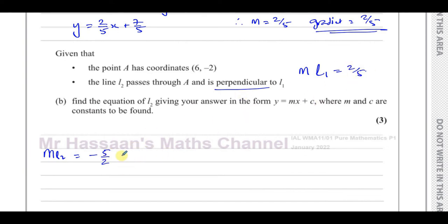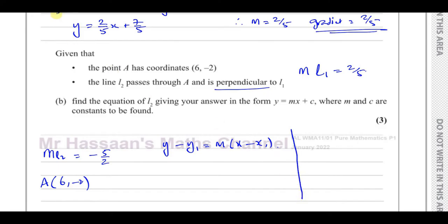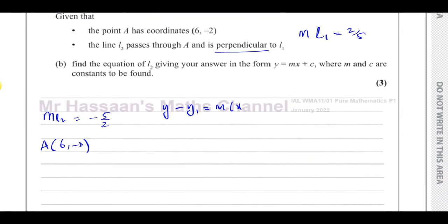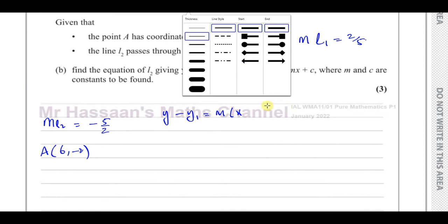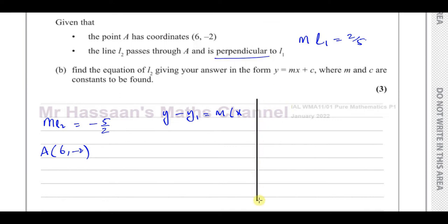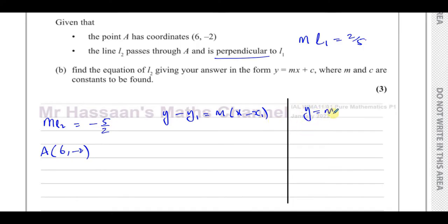So you change the sign and flip it upside down to get the negative reciprocal. Line L2 goes through point A with coordinates (6, -2). I've got two different methods I could use: one using y minus y1 equals m times x minus x1, and another using y equals mx plus c. I'll show you both methods.